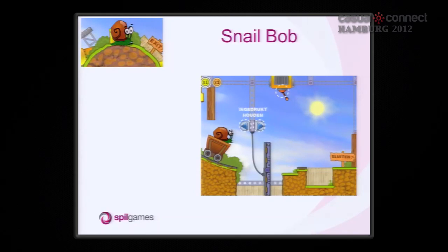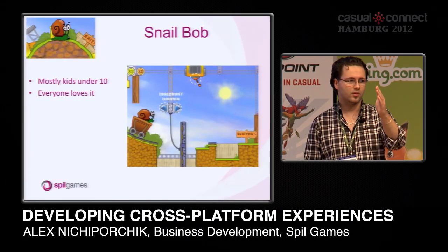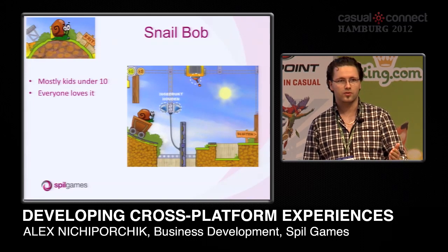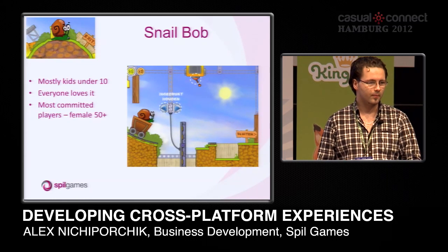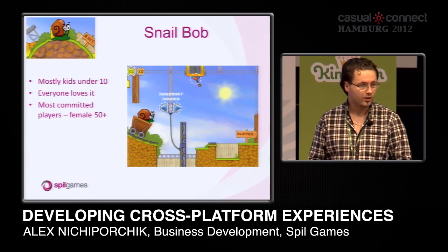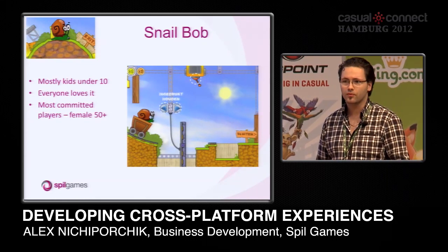Snail Bob is a physics puzzle game where you have to help a snail named Bob get to wherever he's going. It's mostly played by kids under 10, which is surprising. But everyone loves it, so the stickiness across people that do check it out is very high. However, initially it's checked out mostly by kids under 10, and the most committed players, for whatever reason, are female 50 plus.